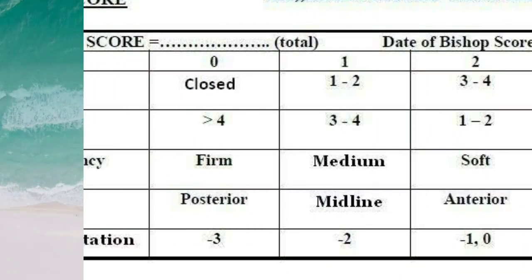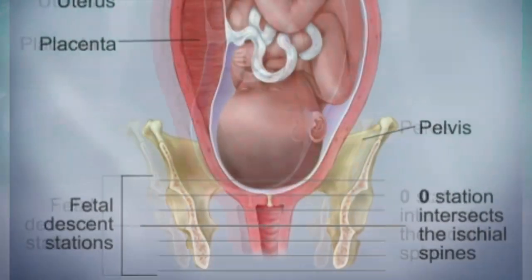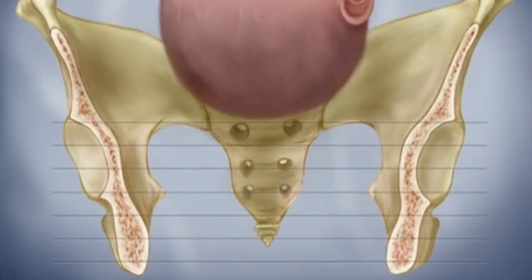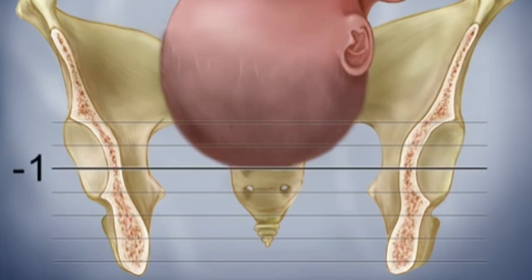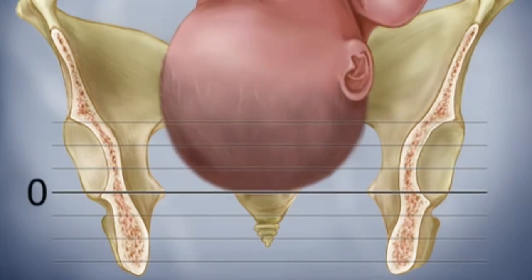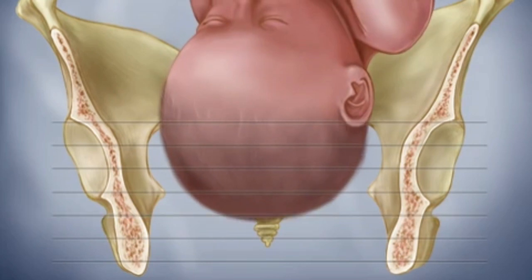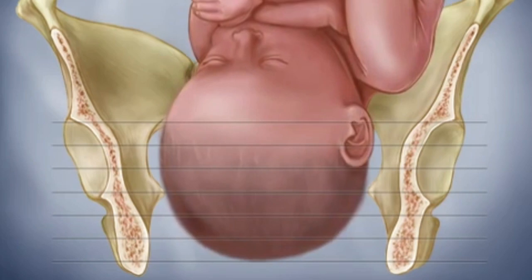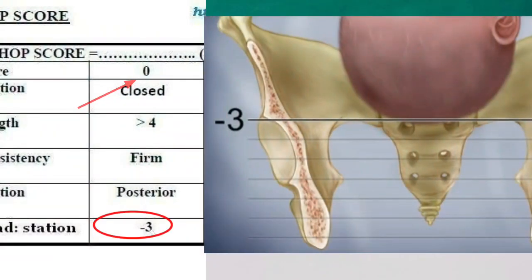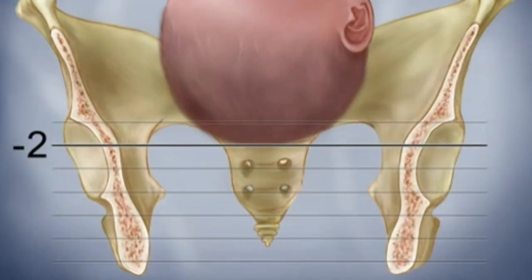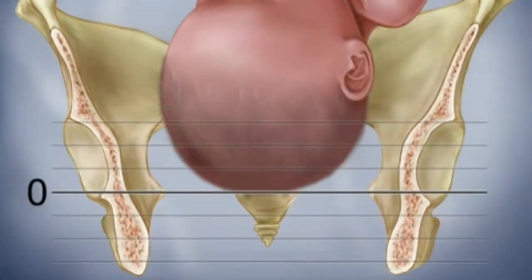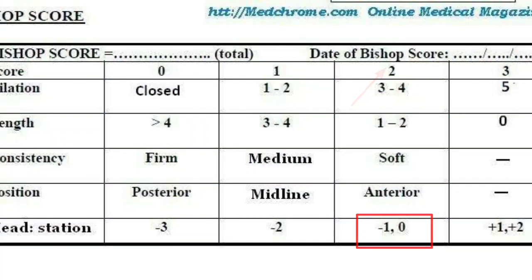The fifth parameter is station of the fetal head, which refers to the descent of the fetal head. Station zero is when the fetal head reaches the ischial spine. Minus stations are above the ischial spine; plus stations are below. If the station is minus three, the score is zero. Minus two gives a score of one. Minus one or zero station gives a score of two. Plus one or plus two station gives a score of three.